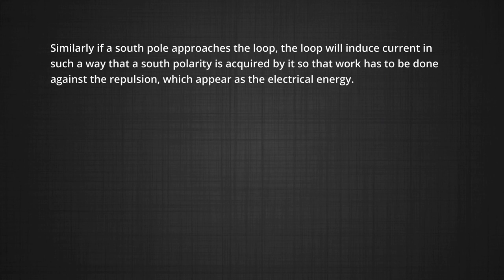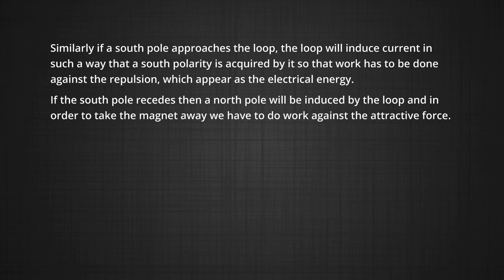Similarly, if a south pole approaches the loop, the loop will induce a current in such a way that a south polarity is acquired by it, so that work has to be done against the repulsion, which appears as the electrical energy. If the south pole recedes, then a north pole will be induced by the loop, and in order to take the magnet away we have to do work against the attractive force.